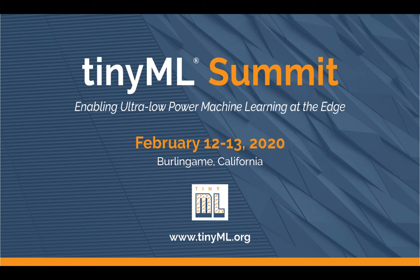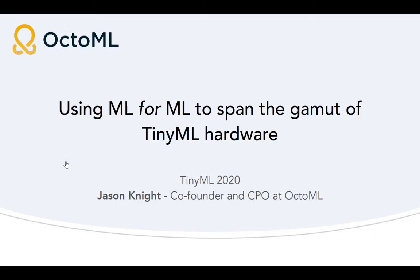Jason Knight is a co-founder and chief product officer at OctoML, where he's bringing efficient machine learning to a broader class of developers and hardware. Before that, he was head of product for ML Software and a principal engineer at Intel working on customer deep learning needs. And even before that, he was a computational biologist. Today, Jason's going to talk to us about using ML for ML to span the gamut of TinyML hardware.